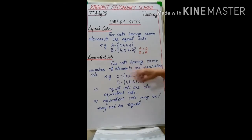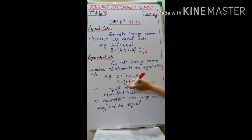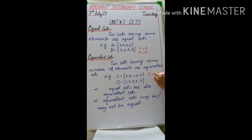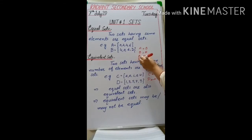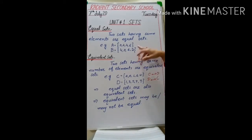Now, equivalent sets: two sets having the same number of elements are equivalent sets. For example, set C has the 5 vowels, so the number of elements is 5. Set D has the first 5 natural numbers, so the number of elements in set D is also 5. When the number of elements is the same, set C is equivalent to set D. Note that equal sets are also equivalent sets, but equivalent sets may or may not be equal.